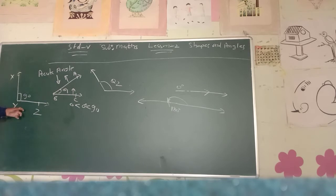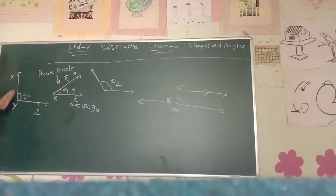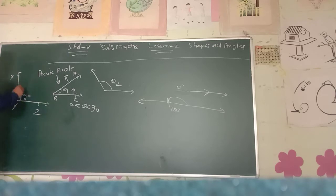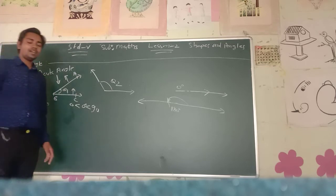This is a right angle. One ray goes in a straight way along the horizontal and the other lies vertically upside in a straight way. Then it is forming 90 degrees and this angle is called a right angle. Right angles are 90 degrees.